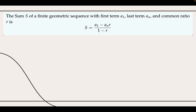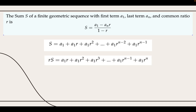We now proceed to find the sum of a finite geometric sequence. To prove this, we write out the sum with each term expressed as a product of the first term and a power of the common ratio. Next, we multiply this equation by the common ratio r. The important step is to subtract the second equation from the first. Note that the first term multiplied by r to the power of n equals the last term multiplied by r, since the last term is a sub 1 times r to the power of n minus 1. Finally, factoring 1 minus r out of the left-hand side gives our desired result.